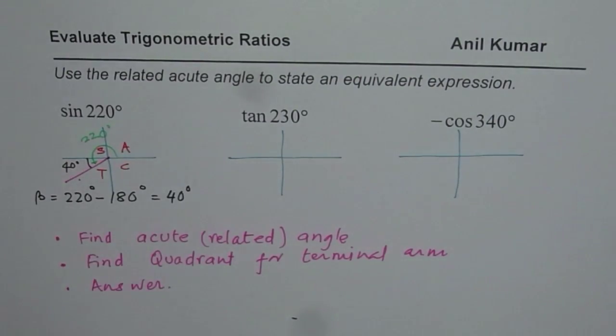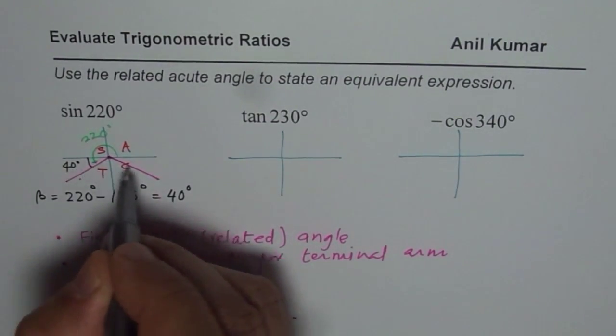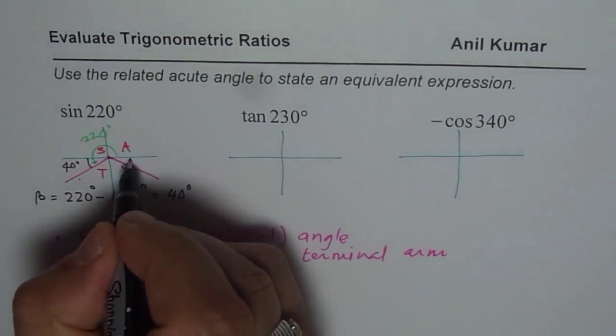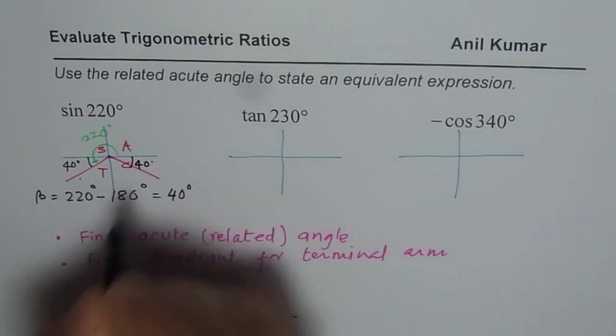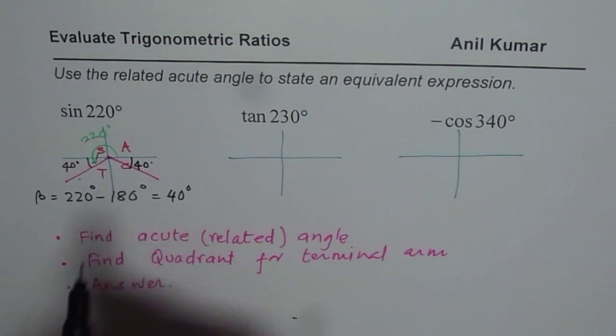So the equivalent angle should be 40 degrees acute, but in quadrant 4. Both will give us negative value. So 40 degrees we are looking for in quadrant 4. So this 40 degrees will give us what principal angle? 360 minus 40.